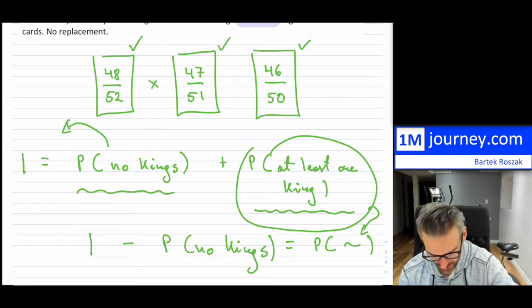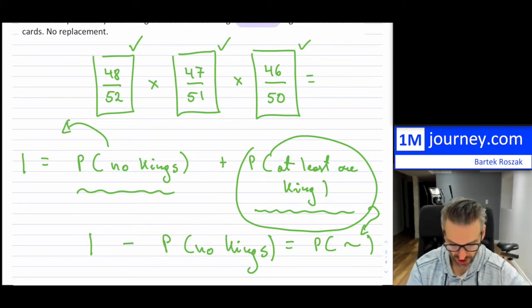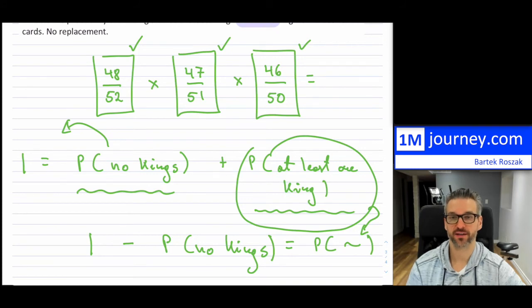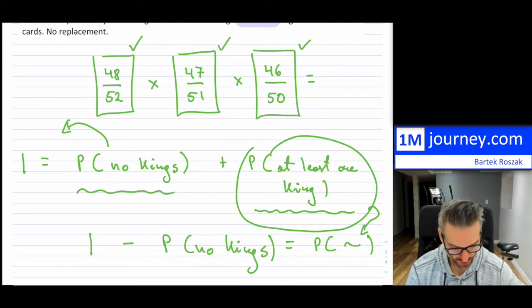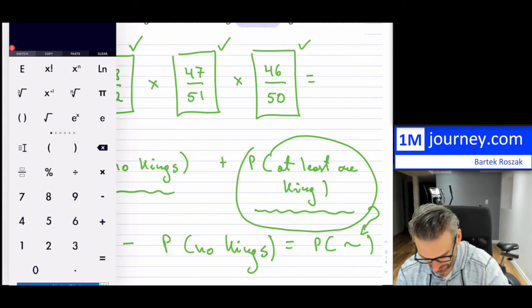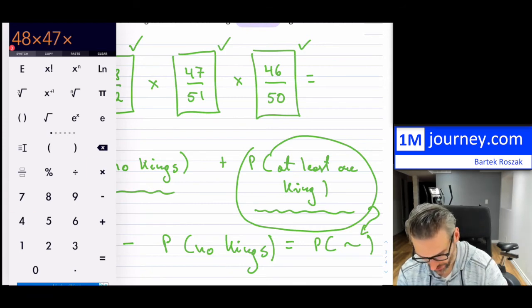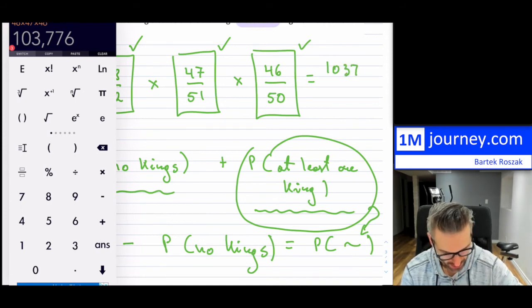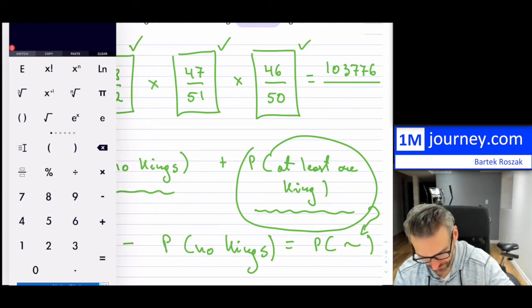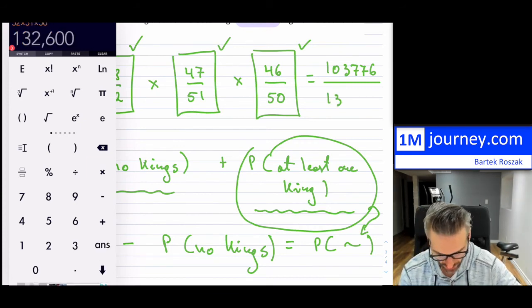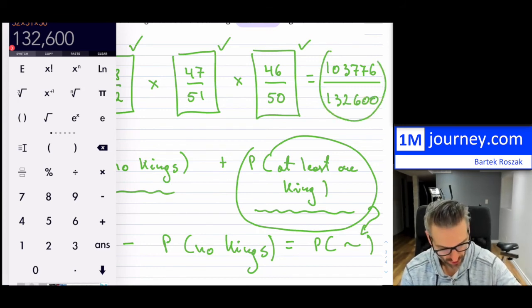Now, if you multiply these through — because they are just the probabilities from the first, second, and third cards — you get the probability of drawing no kings on three consecutive draws from the deck. So we have 48 times 47 times 46 on top, which equals 103,776, divided by 52 times 51 times 50, which equals 132,600. That's your overall probability of drawing no kings at all.